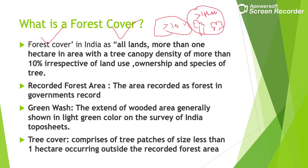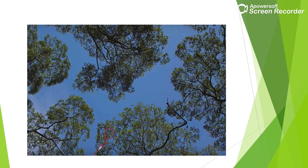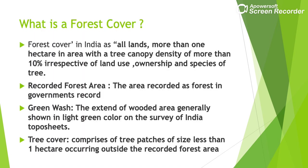Canopy density means — if we're standing below a tree and looking up, the extent to which the sky is covered by the tree's branches is the canopy density. So if any area has land greater than one hectare and canopy density greater than 10%, that area is called forest cover, regardless of whether the ownership is private or government.